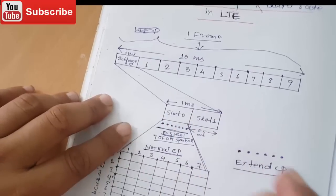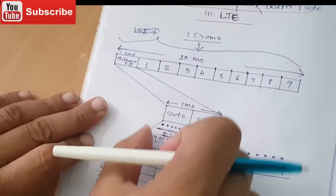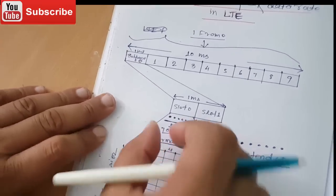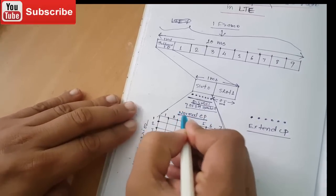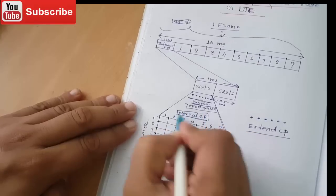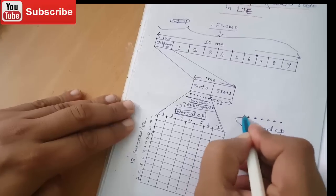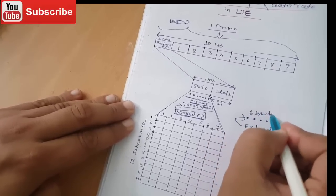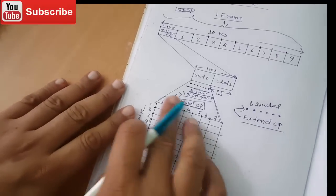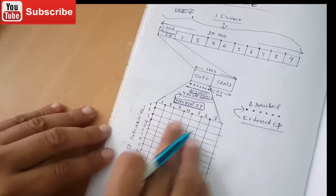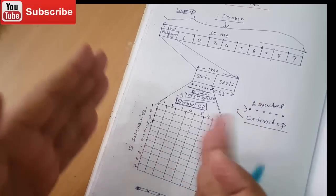One subframe contains two slots: slot 0 and slot 1, each 0.5 milliseconds, totaling 1 millisecond. Slot 0 contains a total of seven OFDM symbols when using normal CP. If extended CP is used, then six symbols are used. I'm talking about normal CP, so seven OFDM symbols are used.